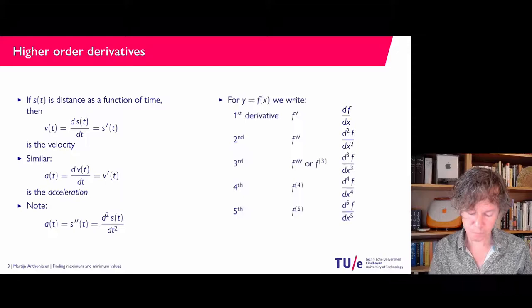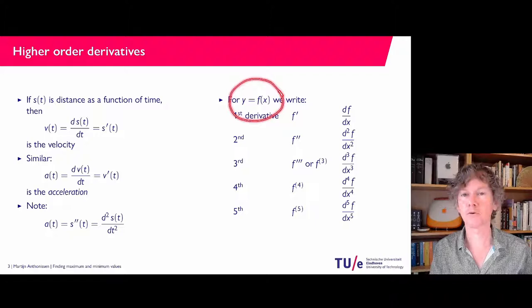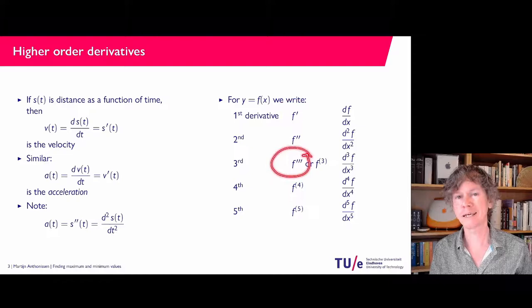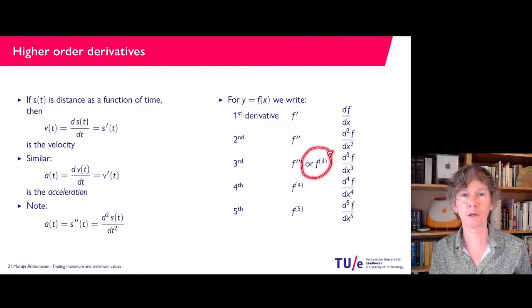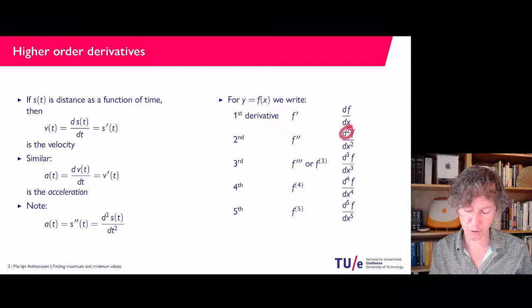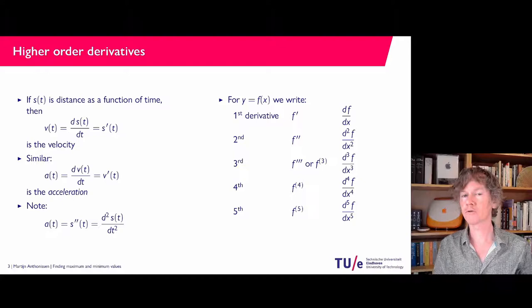In more general notation, we write y = f(x). The first derivative is f prime, the second derivative is f double prime, the third derivative is still three primes — but that notation gets cumbersome. So you also see a superscript with the number in parentheses, such as f⁽³⁾. There is also the notation d²f/dx² for the second derivative, where the d gets a little 2 and the dx gets a little 2. It just means taking a function and differentiating it multiple times.